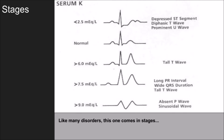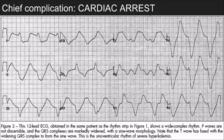As you move above 9 milliequivalents, you begin to see what's called a sinusoidal wave, named after the pattern it represents. Hyperkalemia comes in stages and we can catch a patient at any stage. So let's look at an ECG — say you show up on scene, walk into a patient's room, and the machine spits this ECG out. Do you immediately think hyperkalemia? This is a pretty classic sinusoidal rhythm, representing a very high level of potassium in the bloodstream.